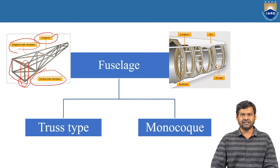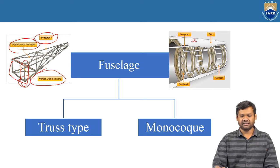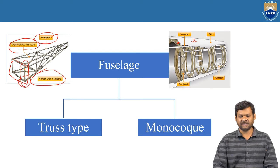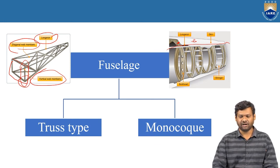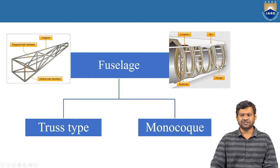Another type of construction is called monocoque construction. In monocoque construction, the major loads are carried by the bulkheads, there are longerons running from one end to the other, and in between the bulkheads there are stringers. In this slide we have clearly identified the elements used in the fuselage construction.